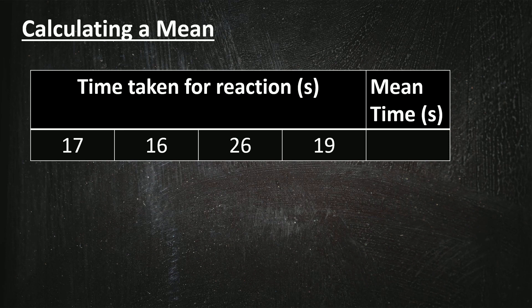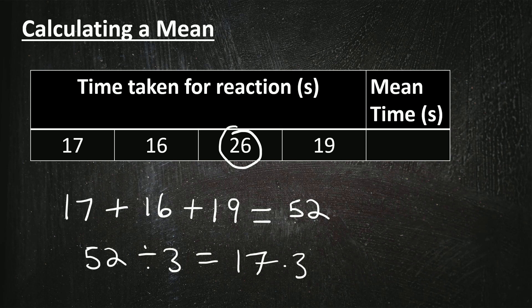The first thing we must do is identify the anomaly, especially if it's a two mark question. So straight away we can see that 26 doesn't fit the rest of the pattern, so we'll circle that. Then we're going to use the three good results that we're left with. So we would do 17 add 16 add 19, actually press equals on your calculator, and then because we've got three good results that we're using, we're going to divide that answer by three and we get 17.3.